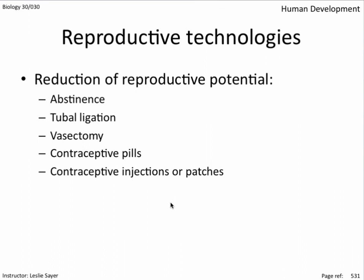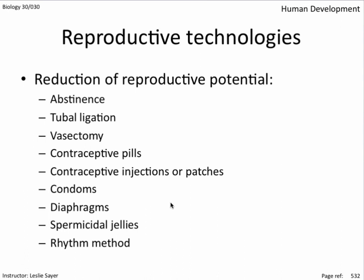Contraceptive injections or patches continually provide the hormone balance to prevent ovulation and stop endometrial development and expulsion, but usually result in a delayed return to fertility compared to other hormonal methods. Condoms are the only other male contraceptive, though female condoms also exist. Diaphragms fit over the cervix and are used in combination with spermicidal jellies to prevent sperm from accessing the uterus. Spermicidal jellies paralyze and kill sperm cells; some people report allergies or irritation. The rhythm method is best used to optimize chances of getting pregnant rather than preventing it, using body temperature changes to indicate when ovulation is occurring.